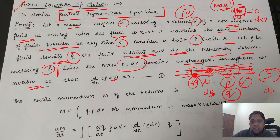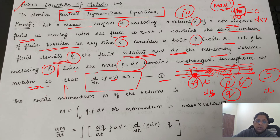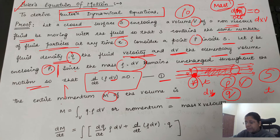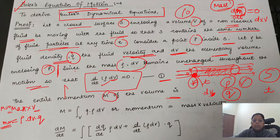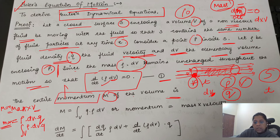The entire momentum of the volume: पूरी parallel pipe का momentum निकालना है। Momentum का formula है mass into velocity। Mass के पास already है और velocity भी — तो momentum होगा ρ·dV·q। Entire volume का निकालना है, so we take an integral with respect to volume V: ∫ρ·dV·q। Rate of change of momentum for the entire volume remains same because mass is same.